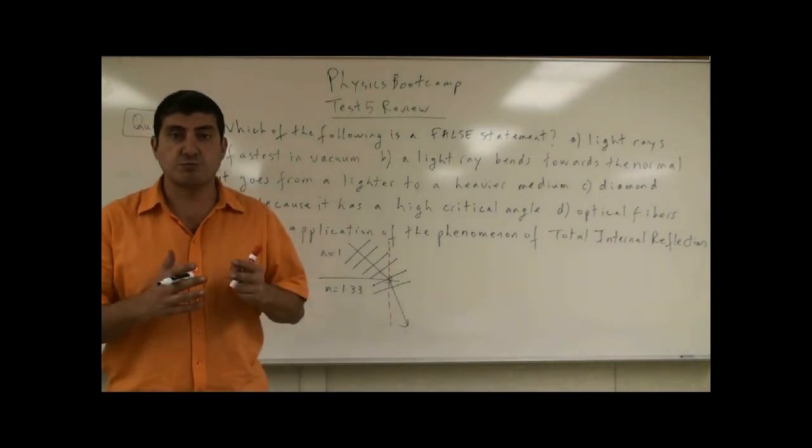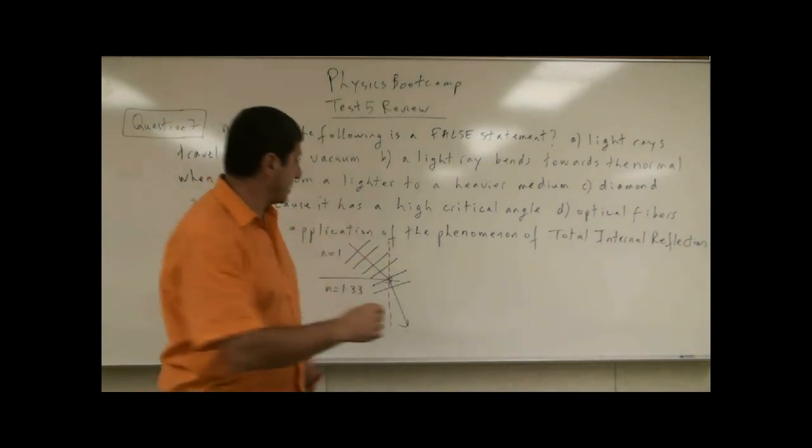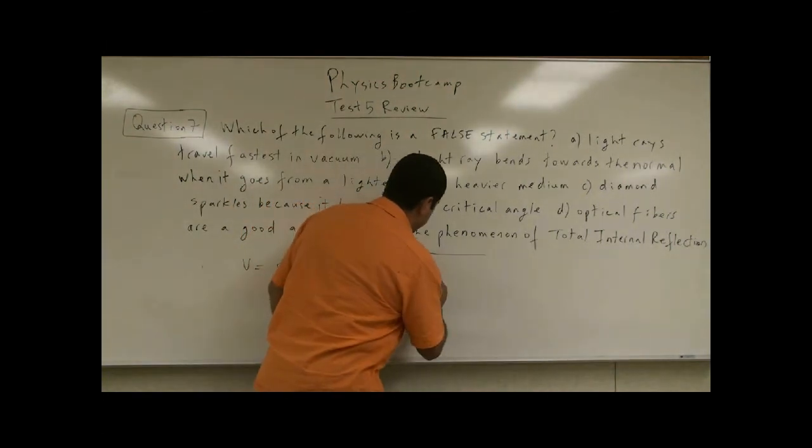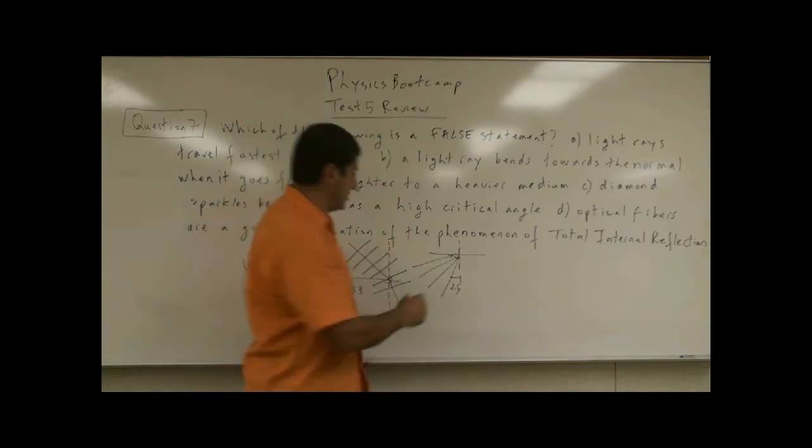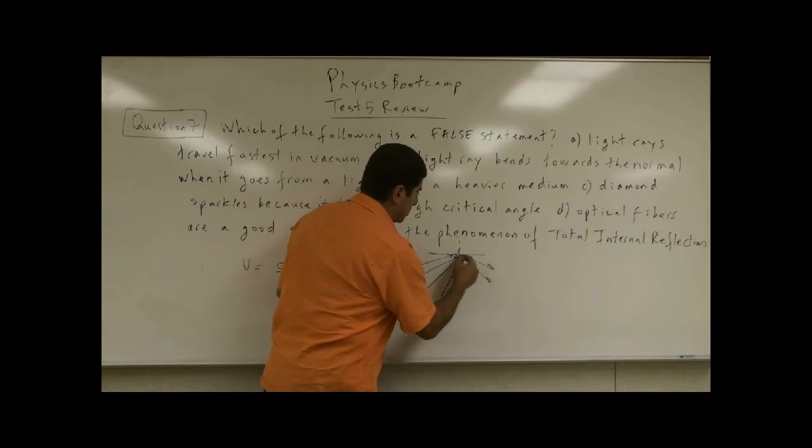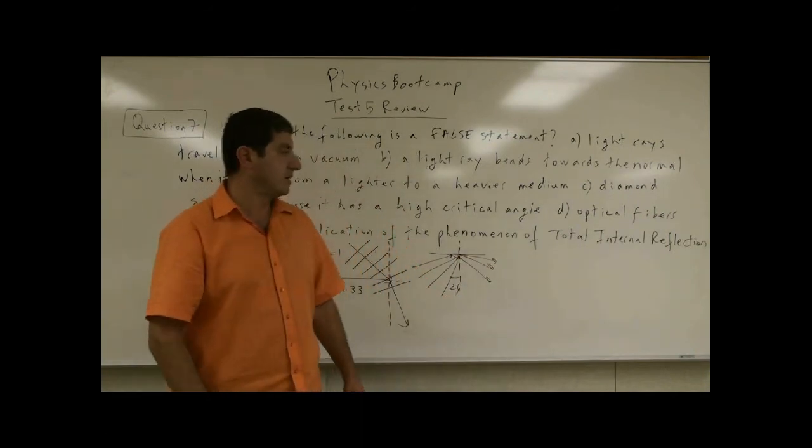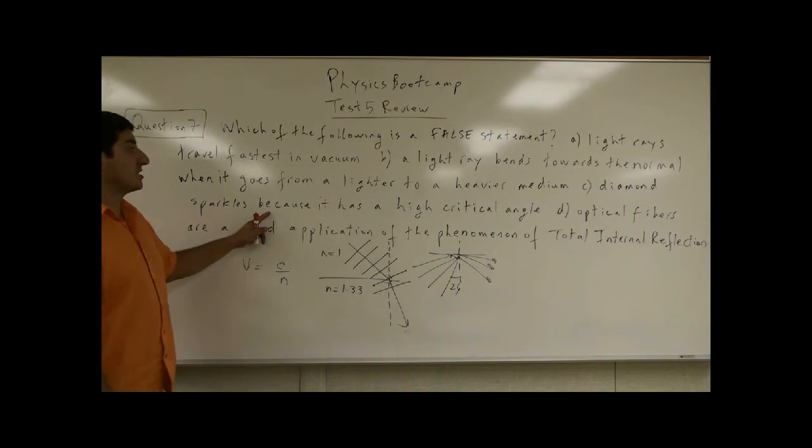So since it's small, any ray of light that is steeper than 24 degrees—so this is 24—anything steeper than 24 gets trapped in the diamond in total internal reflection. So it sparkles because it has a low critical angle. So this is the answer, C.